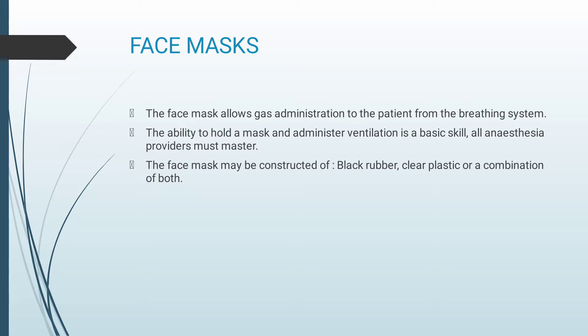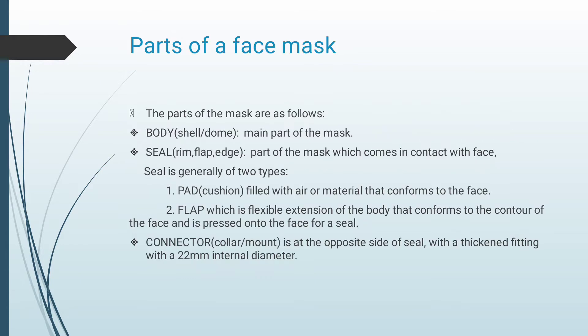Starting with the face mask. The face mask allows gas administration to the patient from the breathing system. The ability to hold a mask and administer ventilation is the basic skill all anesthesia providers must master. The face mask may be constructed of black rubber, clear plastic, or a combination of both. Parts of a face mask are as follows: body, which is also called as a shell or a dome, which is the main part of the mask.